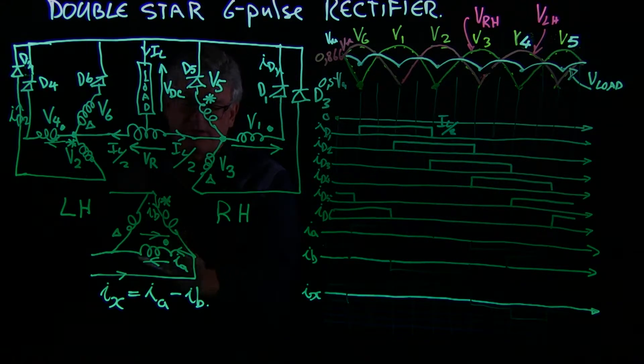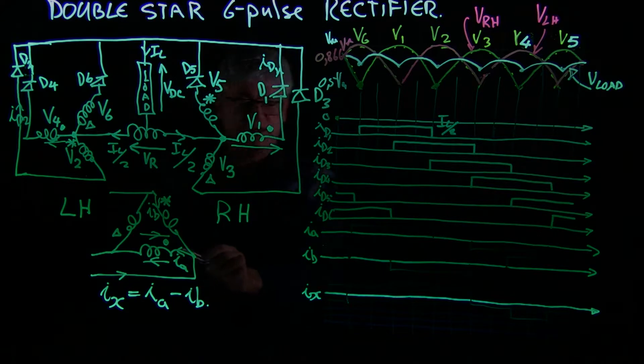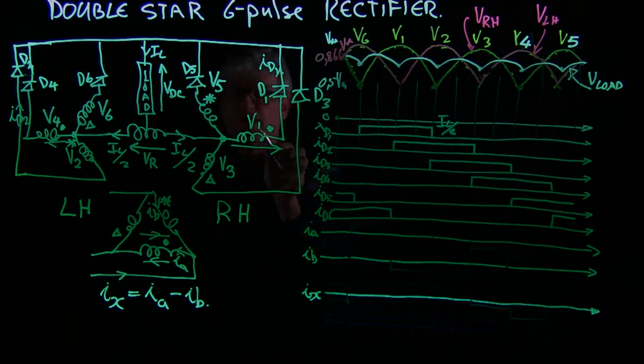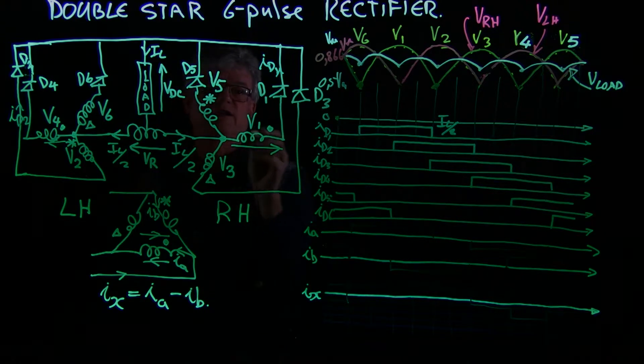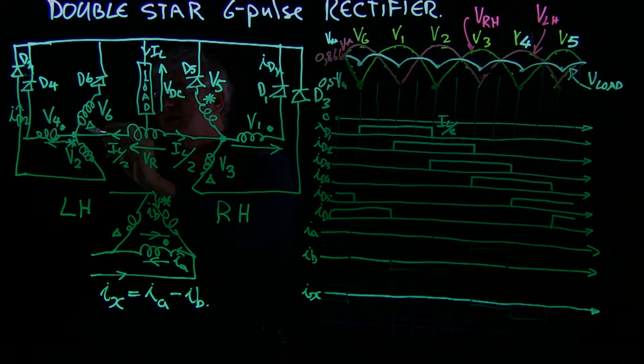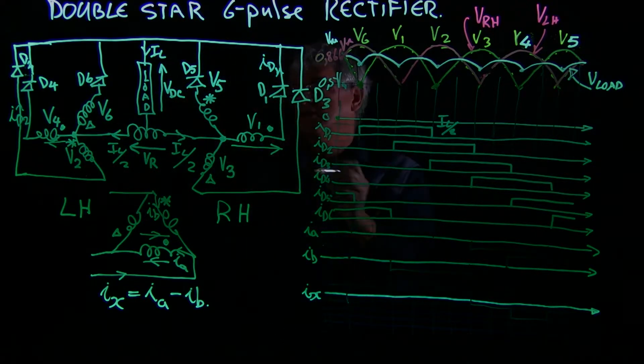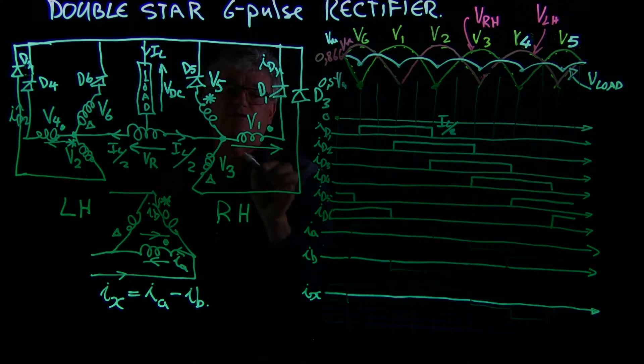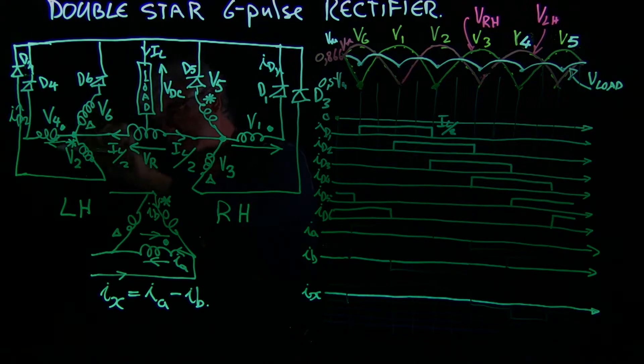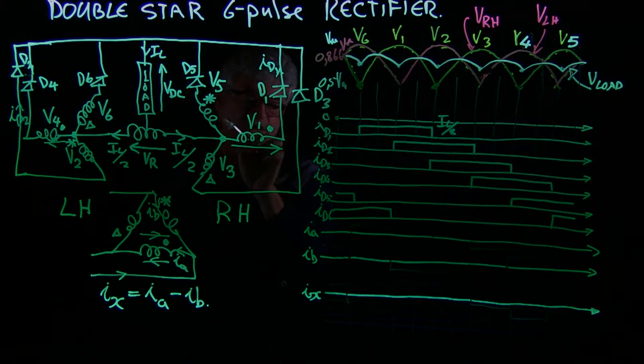When we go to the primary current Ia, we see that Ia is the dot winding, so it is ID1 minus ID4, since the direction that the current flows into the winding here, and here it flows out of the winding.